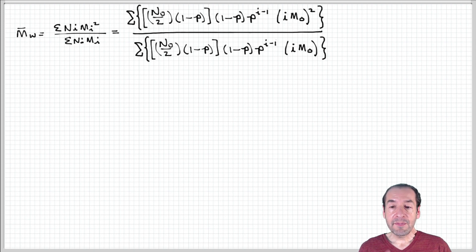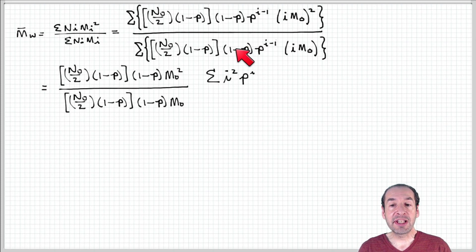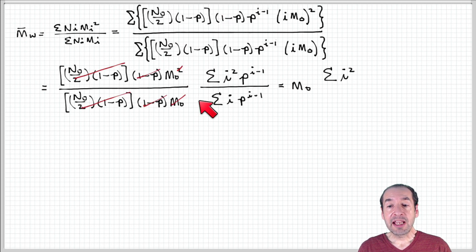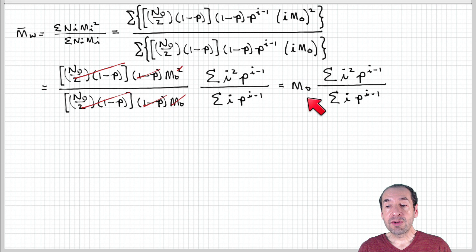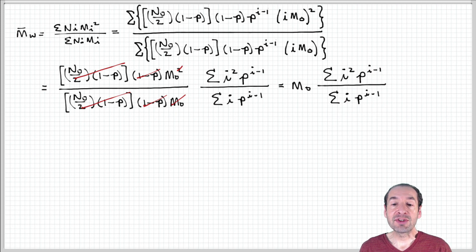If we substitute all these terms into our equation, notice that some of these parameters cancel out — in fact, a lot of them do. We're left with the monomer molecular weight times the ratio of two summations: the sum of i² p^(i-1) in the numerator over the sum of i times p^(i-1) in the denominator.